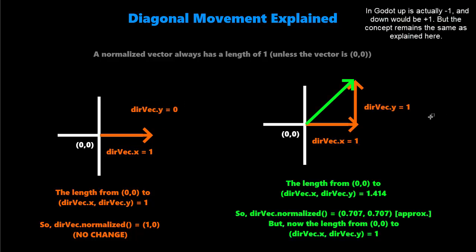But the second that we start moving diagonally, things change. We set x in the direction vector to 1 and y in the direction vector to 1, meaning we want to move diagonally this way. So, similar to the last example, the length from 0, 0, the origin point of every vector,